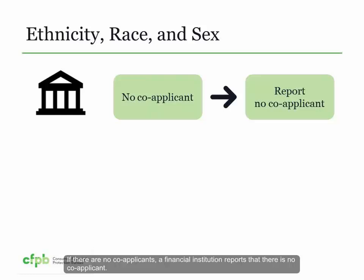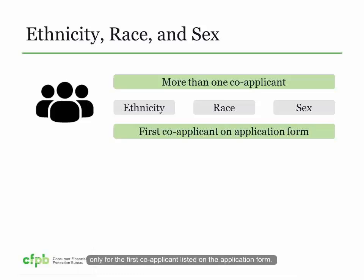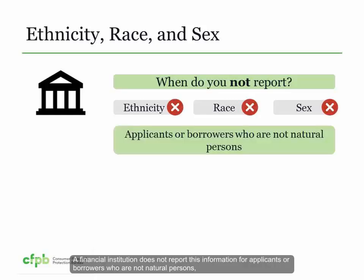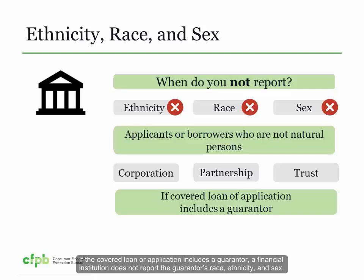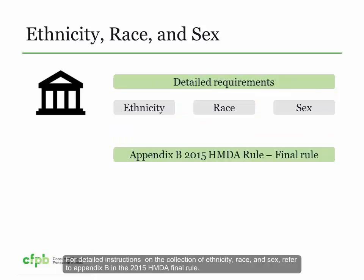If there are no co-applicants, a financial institution reports that there is no co-applicant. If there is more than one co-applicant, the financial institution reports the ethnicity, race, and sex only for the first co-applicant listed on the application form. A financial institution reports not applicable for ethnicity, race, and sex when the applicant or borrower is not a natural person — for example, a corporation, partnership, or trust. If the covered loan includes a guarantor, the guarantor's race, ethnicity, and sex are not reported. For purchase covered loans, if the financial institution chooses not to report, it reports that the requirement is not applicable. For detailed instructions, refer to Appendix B of the 2015 HMDA Final Rule.